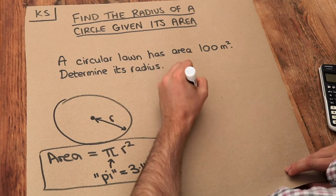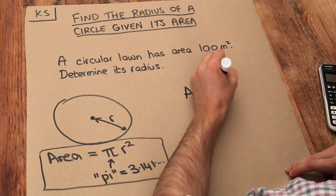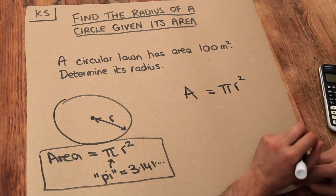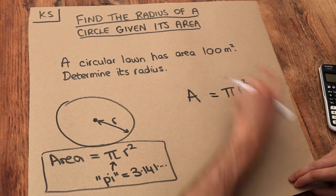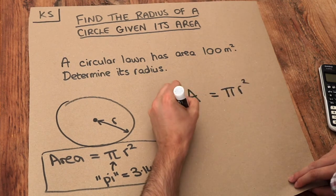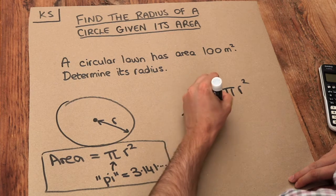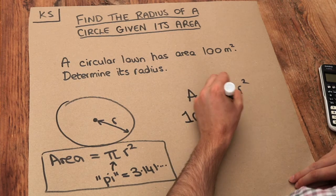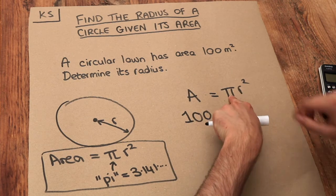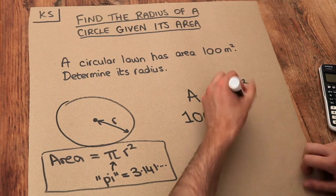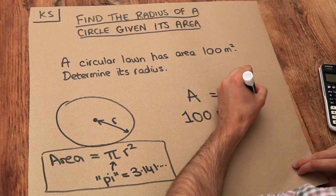But that's fine if we just write out the formula: the area equals pi r squared. Let's just substitute in what we know. We're told the area is 100, so I'm going to substitute that for 100. And then we've got the pi here, and I'm going to use a times symbol because pi r squared means pi times r squared. And we've got the radius squared.